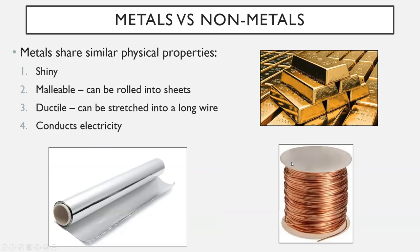Some physical properties of metals versus non-metals: on your periodic table, metals have a green background and non-metals have an orange-peach color background. In the real world, metals share similar physical properties. Metals are shiny — at least you can polish them and make them shiny. They're malleable, meaning they can be rolled into sheets. They're ductile, meaning they can be stretched into a long wire. And they conduct electricity — some conduct better than others, but all metals will conduct electricity to some extent. Non-metals are the opposite: not shiny, not malleable, not ductile, and they don't conduct electricity.